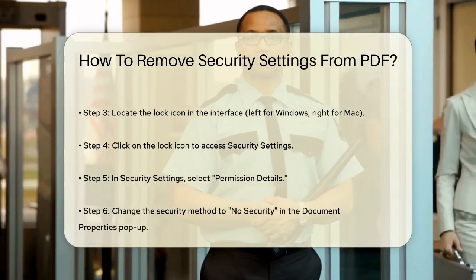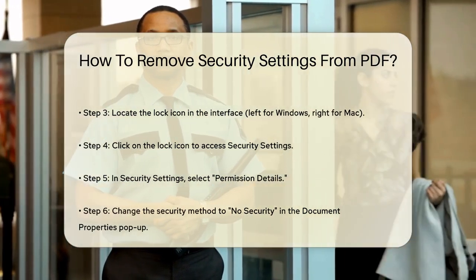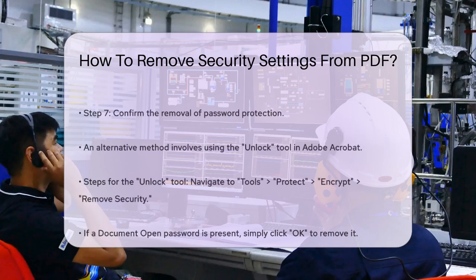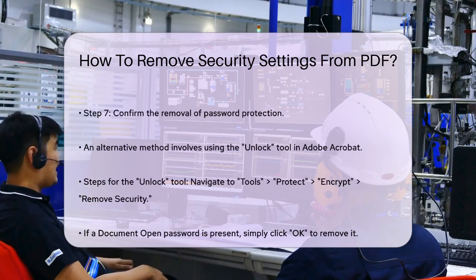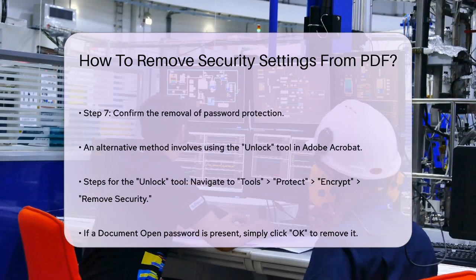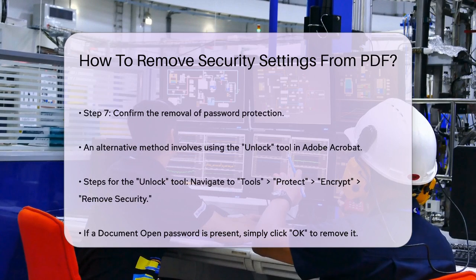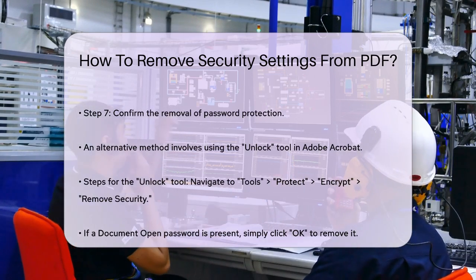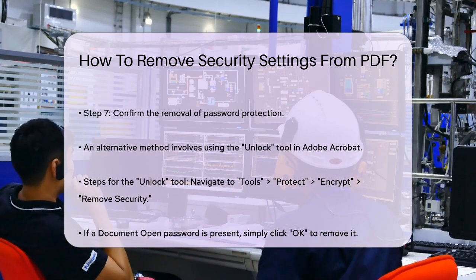Another way to remove security settings is by using the unlock tool in Adobe Acrobat. Here's how. Open the PDF in Adobe Acrobat. Go to Tools, Protect, Encrypt, Remove Security. If the document has a document open password, simply click OK to remove it. If it has a permissions password, type it in the Enter Password box and click OK to confirm the action.